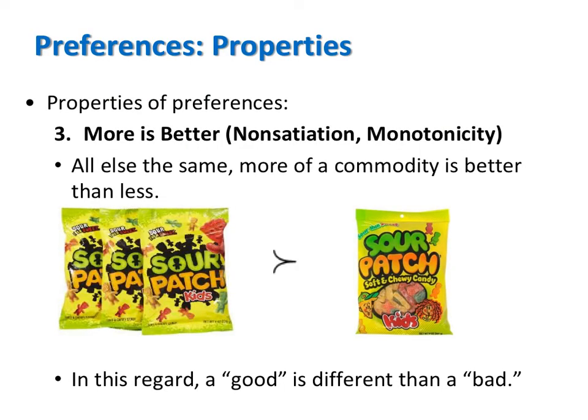The third and final preference property, which we will assume most of the time but sometimes relax, is the assumption that more is better. This is also called non-satiation or monotonicity. My favorite economics professor in college called this the pig principle. What this says is that all else the same, more is better than less. For example, three bags of Sour Patch Kids is strictly preferred to only one. In this regard, we can distinguish between a good good and a bad good. A good good is something for which more is better; a bad good is something for which less is better. We'll explore those in class.